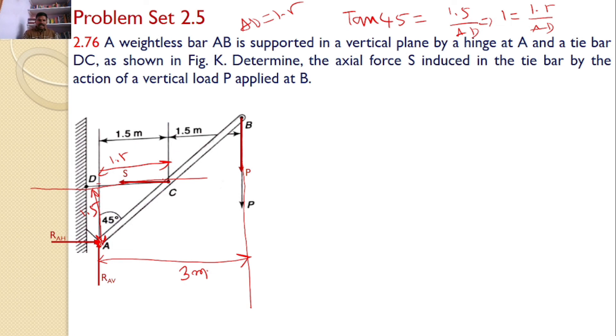Hence, I can apply the moment equation now. So, P into 3 minus S into 1.5 is equal to 0. Or, our interest is to find the S. Hence, S is equal to 2P is the answer for the given problem.